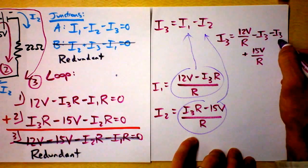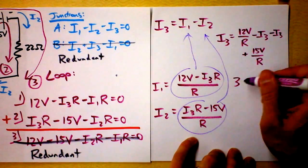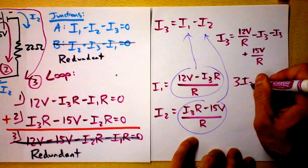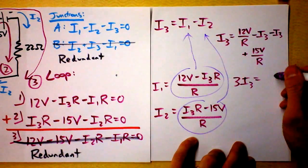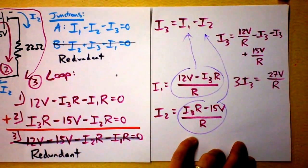So I could make, what am I going to do? I'm going to add two I3s to both sides. So I say that three I3 is, oh my goodness, this is way too much detail. How many? 27 volts divided by R.